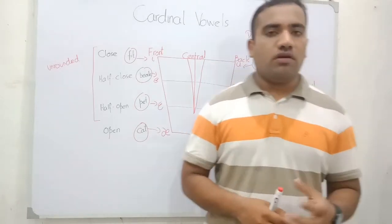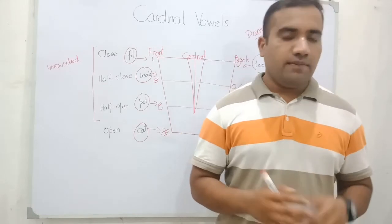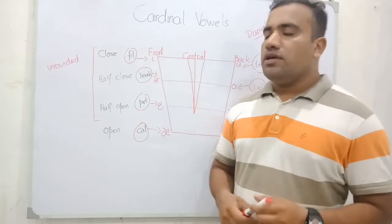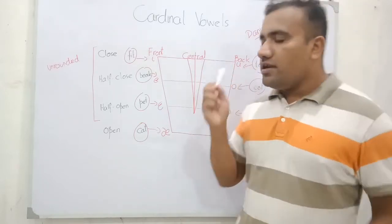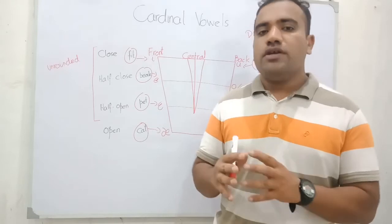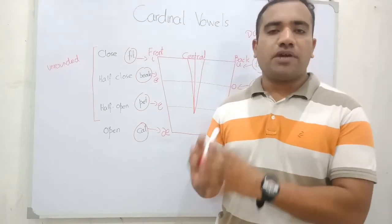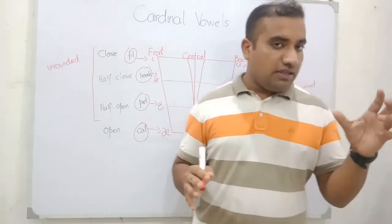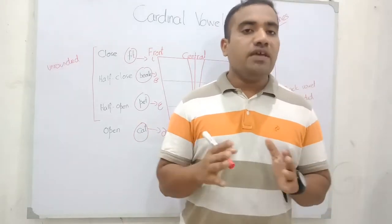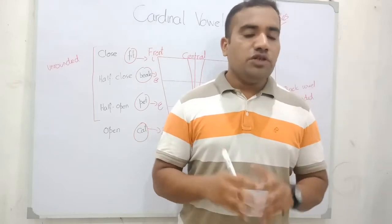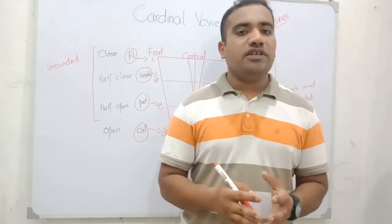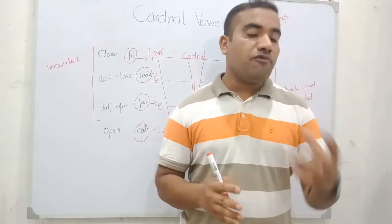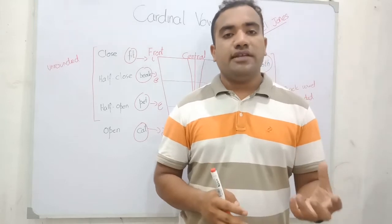The basic vowels are called the cardinal vowels, and these concepts were initiated and developed by Daniel Jones. He has postulated that there are some basic primary cardinal vowels that may not exist in any language, but they are very helpful. When we try to find out the vowels in a language, these cardinal vowels are very helpful in finding out the vowels in any language.